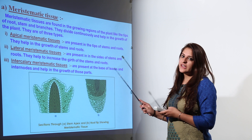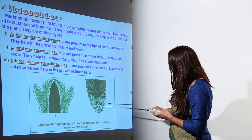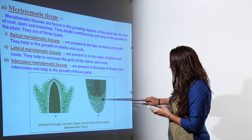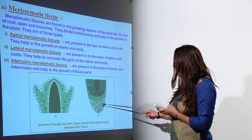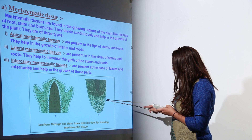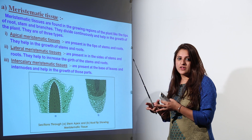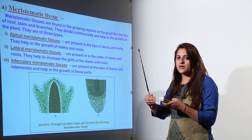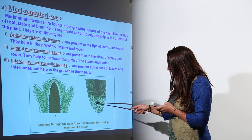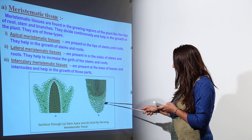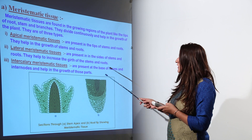Meristematic tissue is present in the tips area. This is a cross section of the stem apex and a cross section of the root apex showing meristematic tissue. These are small cells with a prominent nucleus, quite thin cell walls, and a large vacuole. These cells lack intercellular space — intercellular space being the space between adjacent cells. These are actively dividing cells, and intercellular space is absent in meristematic tissue.